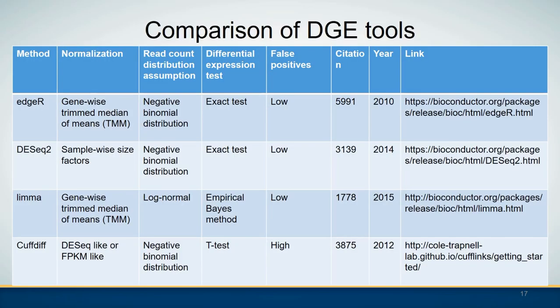Now let's compare the most popular DGE tools. Most of the DGE tools use the negative binomial distribution to model the read count distribution. DESeq2 and LIMMA-voom tend to be more conservative than edgeR, but edgeR is recommended for experiments with fewer than 12 replicates. Tools based on the negative binomial distribution have improved sensitivity and specificity, giving good control of the false positive rate. If you want to know more about those tools you can follow the links provided.